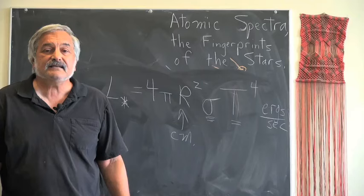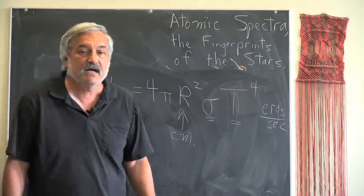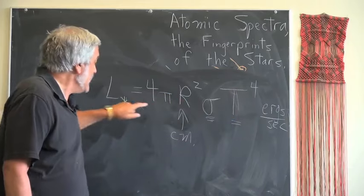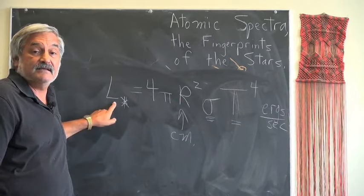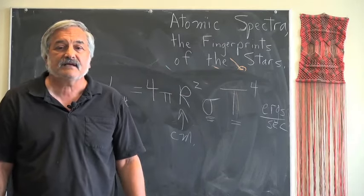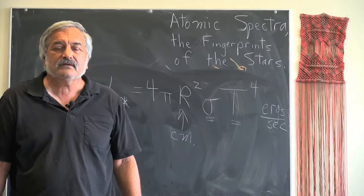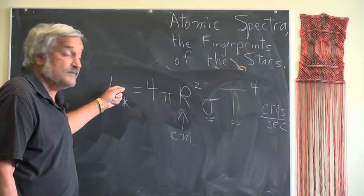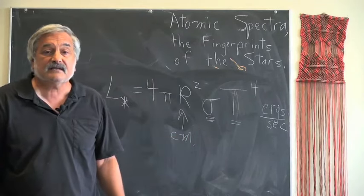The units on this luminosity depend on what units we measure for sigma and what units we measure for the radius. T is always going to be in Kelvin. For instance, if this was in CGS units, we would have ergs per second here and r would be measured in centimeters. Now you can see the effects of the high power that luminosity has on temperature. A mere factor of 10 in temperature corresponds to a factor of 10,000 in luminosity.